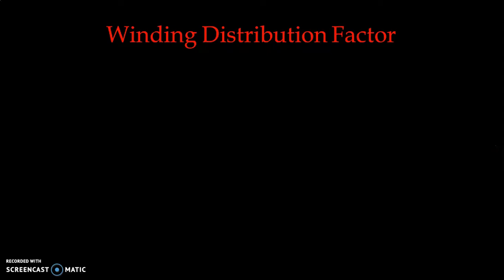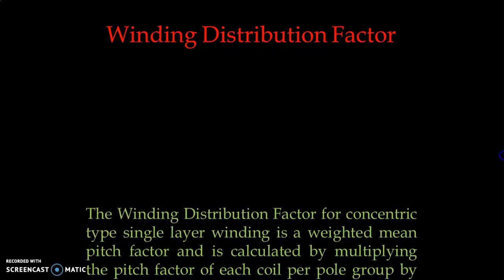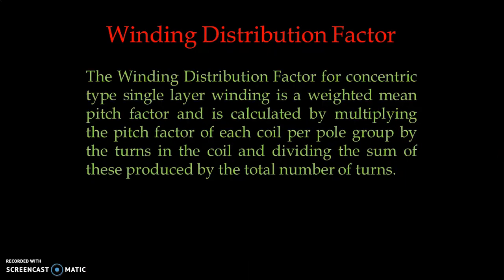Now let us consider the winding distribution factor and how to calculate it. This is the arrangement we have just considered for our nine slots and four different coils. The winding distribution factor for concentric type single layer winding is a weighted mean pitch factor. It is calculated by multiplying the pitch factor of each coil per pole group by the turns in the coil, and dividing the sum by the total number of turns. Let us see the equation form.